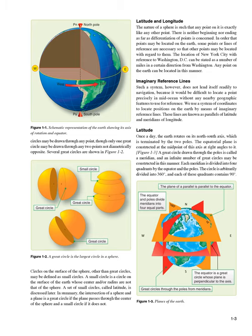Latitude and Longitude. The nature of a sphere is such that any point on it is exactly like any other point. In order that points may be located on the earth, some points or lines of reference are necessary. We use a system of coordinates to locate positions on the earth by means of imaginary reference lines known as parallels of latitude and meridians of longitude. Once a day, the earth rotates on its north-south axis, which is terminated by the two poles. The equatorial plane is constructed at the midpoint of this axis at right angles to it.